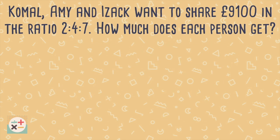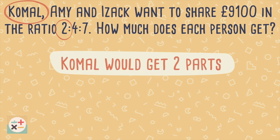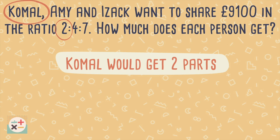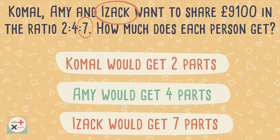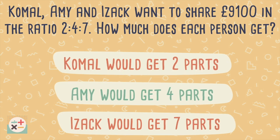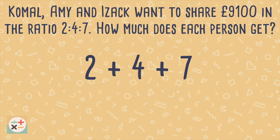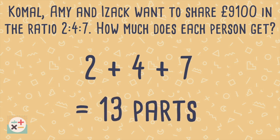Consider this question. Firstly, we need to understand how many parts each person will get. The subjects in the ratio question are always written in the same order as the ratio itself. In order to share out the money according to the ratio, we first need to find out how many parts there are in total by adding up all the numbers in the ratio. So here we have 13 parts.